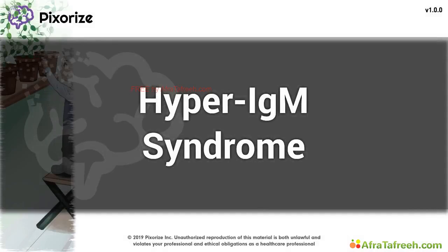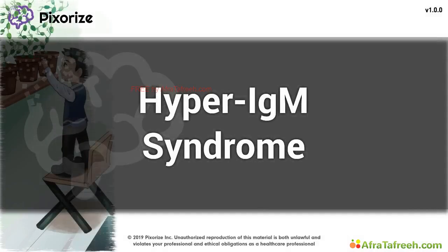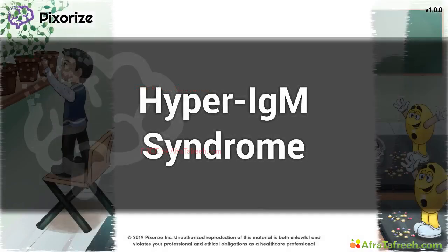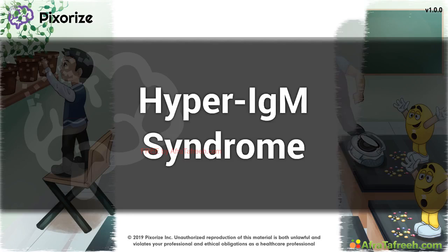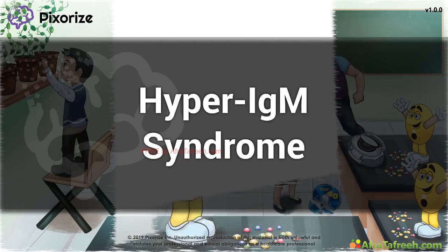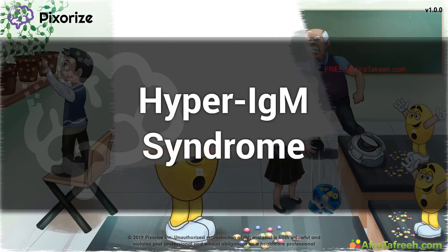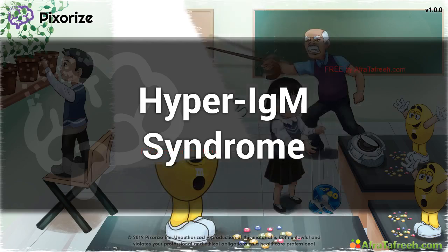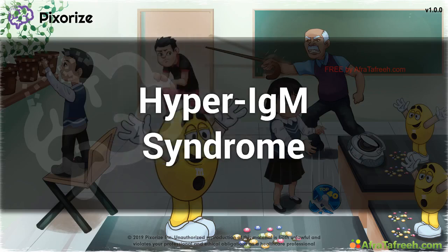Hyper-IgM Syndrome is an immunodeficiency characterized by the inability of B cells to undergo class switching. It is caused by a deficiency in CD40L, a receptor necessary for the class switching process. In this video, I'll give you my visual mnemonic to remember all the important facts about Hyper-IgM Syndrome.